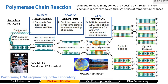Primers and heat-stable DNA polymerase are combined with the extracted DNA. The solution is then subjected to repeated heating and cooling cycles using a thermal cycler. Different temperatures catalyze the reaction of primers and polymerases. In the cycle, there are three steps: denaturation, annealing, and extension.